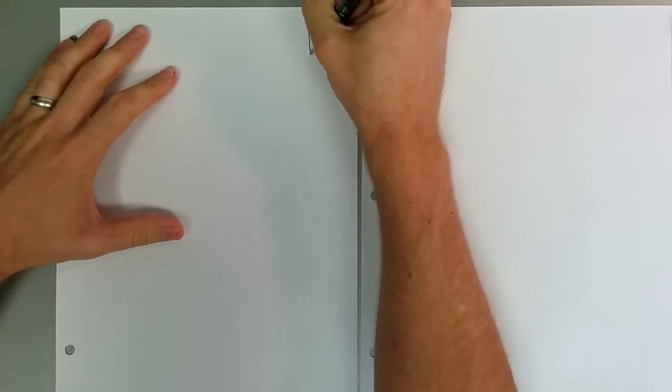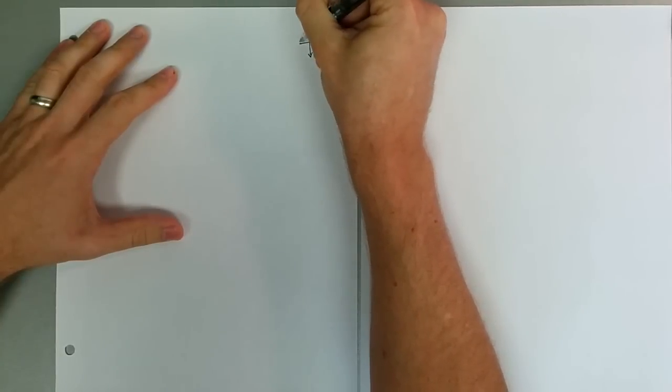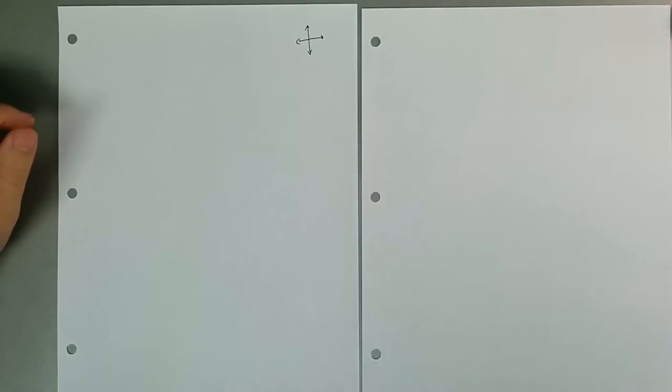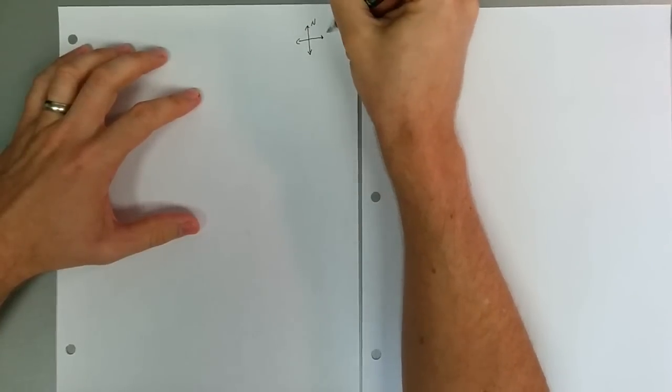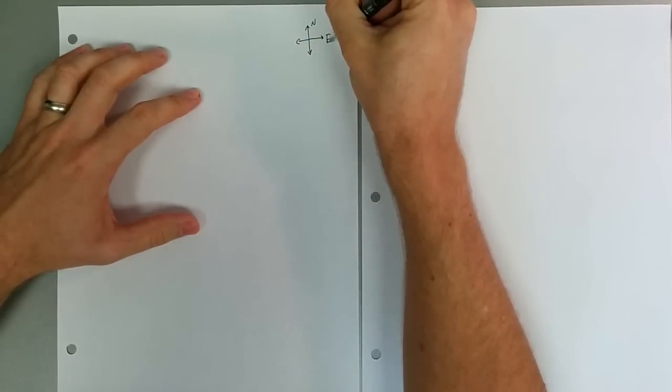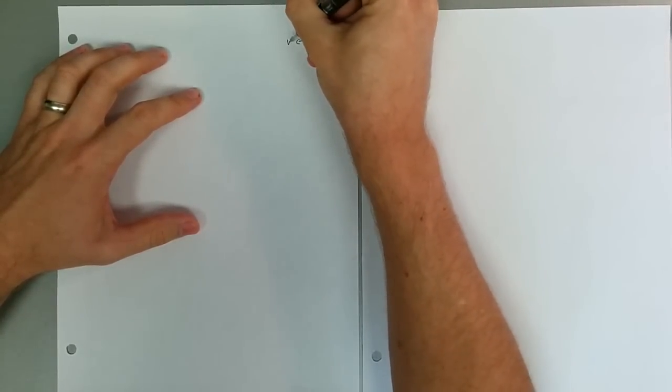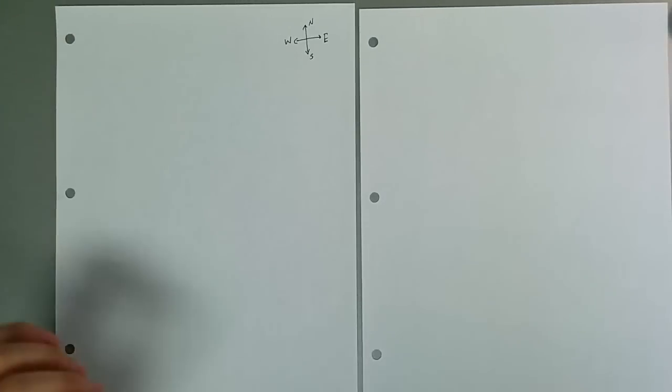First, just for those of you who don't remember this stuff, this is what west, northwest, etc. looks like. North goes up, east goes to the right, south, west, just so we got that down.